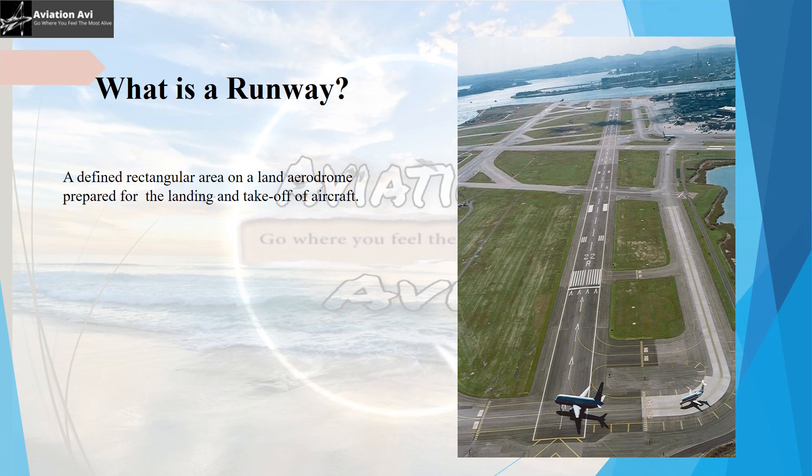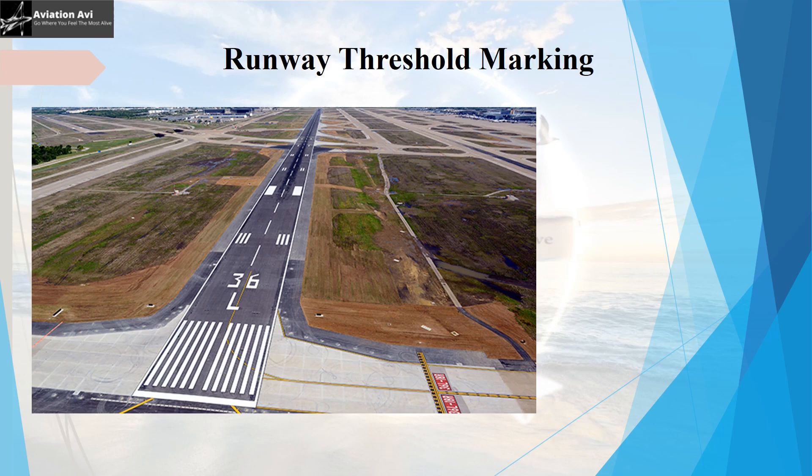First we must understand what a runway is. A runway is a rectangular area on a land aerodrome that is prepared for landing and takeoff of an aircraft. The first marking we are looking at is the runway threshold marking.